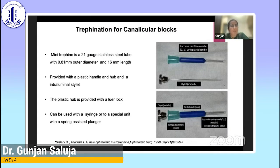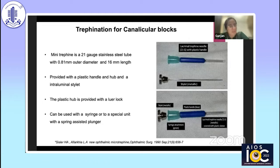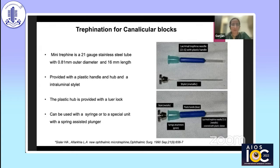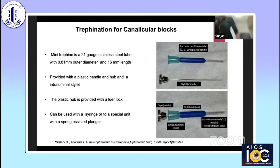Trefination is another option, usually preferred in patients having distal canalicular blocks. A minute trephine is a 21-gauge stainless steel tube with a diameter of 0.181 mm and a length of 16 mm. It is provided with a plastic handle, a hub, and an intraluminal metallic stylet, and can be connected to a syringe or a special unit.